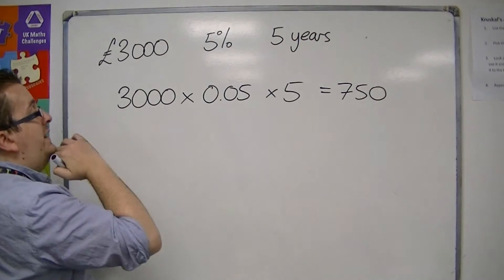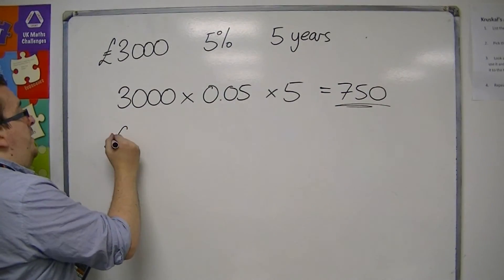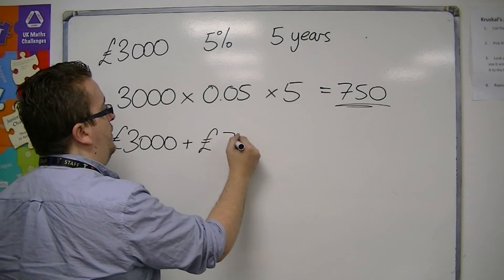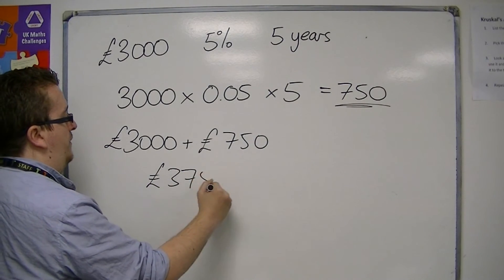And so that is the interest that I earn. And so the final amount is the 3,000 pounds plus the 750 pounds. So 3,750 pounds.